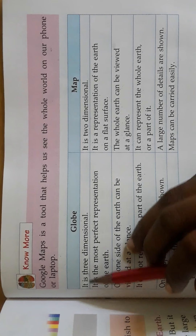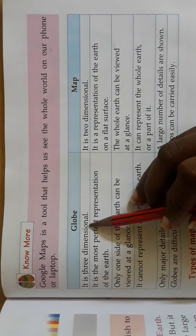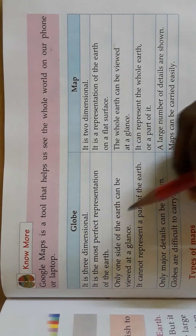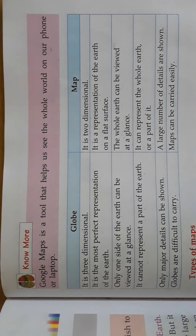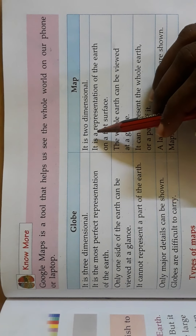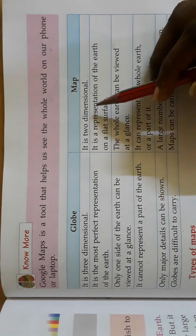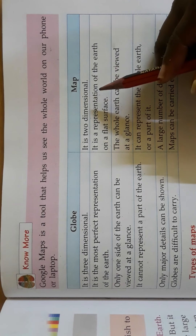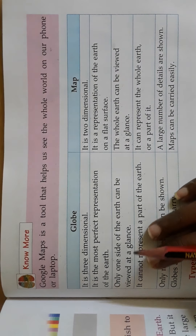Now we can see the difference between the globe and the map. The globe is three dimensional — 3D. If you see the ball, you can see around 360 degrees. But a map is two dimensional only — it is written on a flat surface.